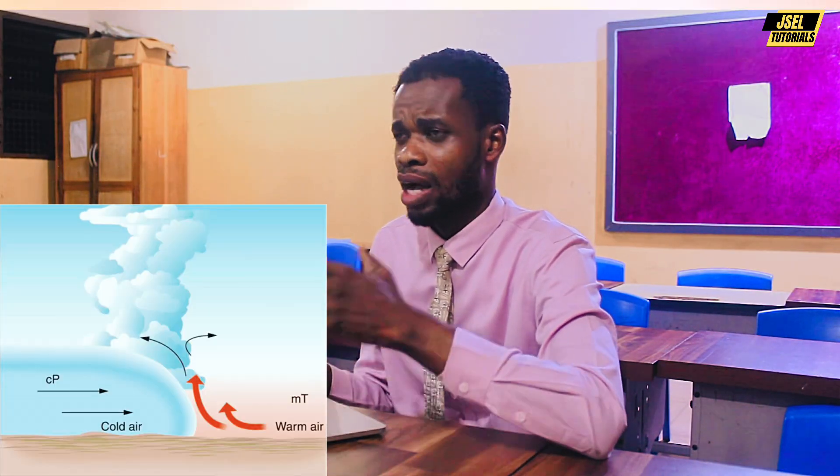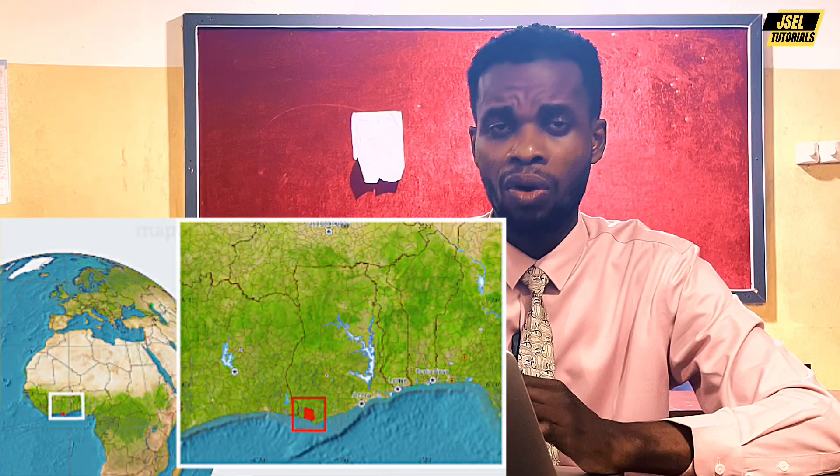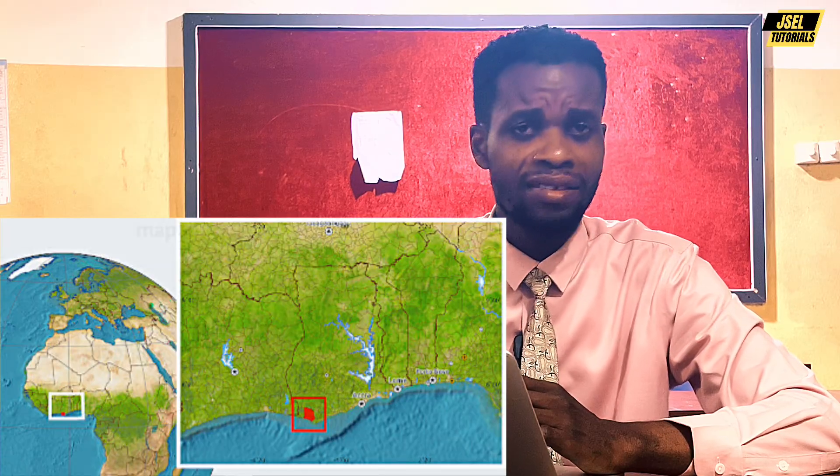This clash leads to what we call cyclonic rainfall. Cyclonic rainfall involves two air masses clashing, and when they meet the cyclone generates rainfall. You can also have convectional rainfall, where water vapor enters the atmosphere because of the large volume of the ocean, triggering condensed clouds to fall as heavy rains in that part of Ghana.